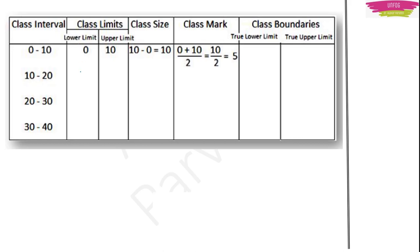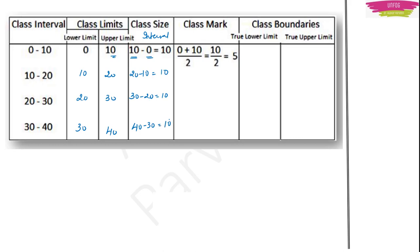Lower limit: for 10 to 20 it is 10, for the next it is 20, then 30. Upper limit — the greater number: 10, 20, 30, 40. Simple. Then class size: upper limit minus lower limit gives 10 in each case. Class size is the same as class interval.